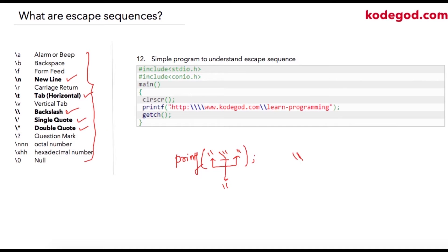This is a basic program where we're going to print the URL for codegod.com. The actual URL is http colon slash slash www.codegod.com slash learn programming. What the compiler will do - because we want to print double slash, we'll have to add double slash as an escape sequence for printing single slash. Similarly, for the second slash, we'll have to provide double slash.